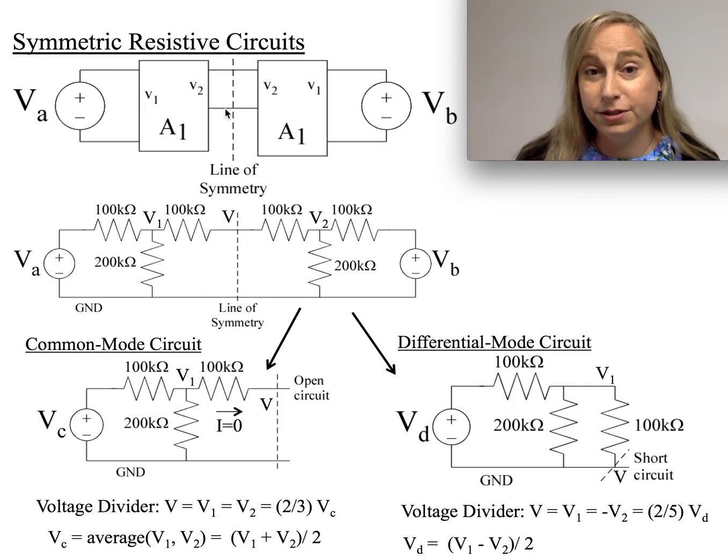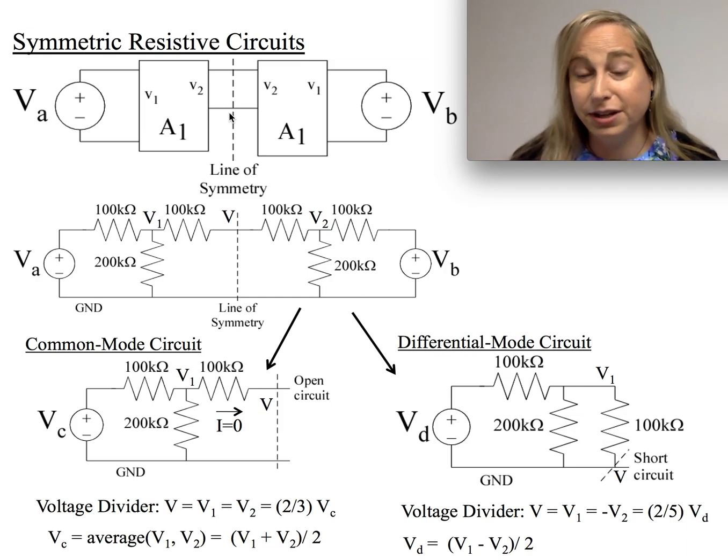So one of the things we find for that symmetry is that we can actually just cut this line such that no current flows across it, because nothing is changing or going across those equal levels.